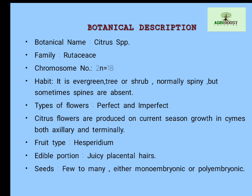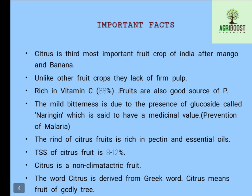Next, important facts about citrus: citrus is the third most important fruit crop of India after mango and banana. Unlike other fruit crops, citrus lacks firm pulp. It is rich in Vitamin C — about 88 percent of Vitamin C is present in citrus species — and it is also a good source of phosphorus.